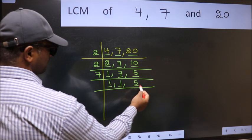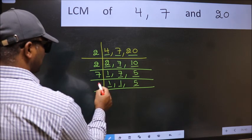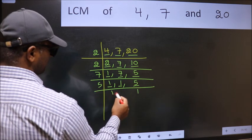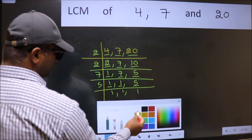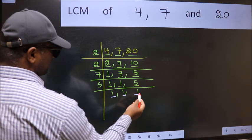So focus on the next number 5. 5 is a prime number, so 5 once is 5. So we got 1 in all three places.